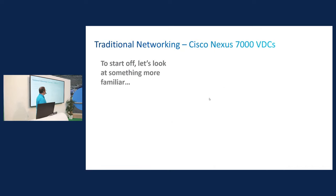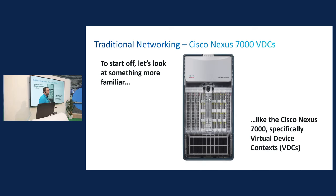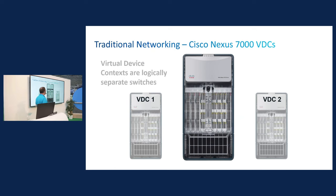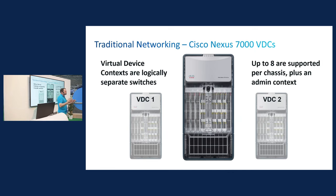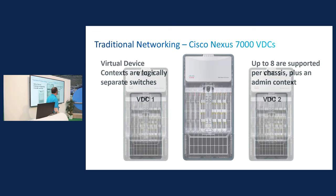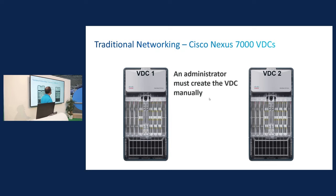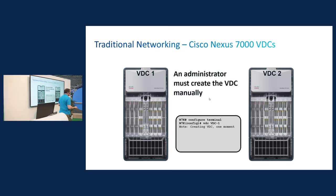So let's start off with something we already know: Nexus 7000 VDCs. When they came out, it was a revolutionary concept — the idea of being able to carve a switch up into logical switches. But it's something we take for granted a lot now. With VDCs, you created logically separate switches that were just like standalone switches. In fact, if you wanted the first VDC to talk to the second VDC, you might have to connect ports on the same line card. Once you've created the VDC, you go into the command line, do the switchto command, and all of a sudden it's like you're in a completely separate switch.